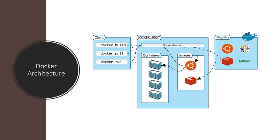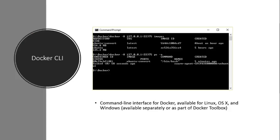The Docker run command runs a container using an image as a template. The Docker client, also known as the Docker CLI, is the primary tool you use to manage Docker containers. You can download container images from repositories such as Docker Hub, build container images, run container instances, list container images and instances, and much more. After connecting to Azure Container Services using SSH, you can use port forwarding to execute commands locally that act on an Azure Container Services instance running in the cloud.